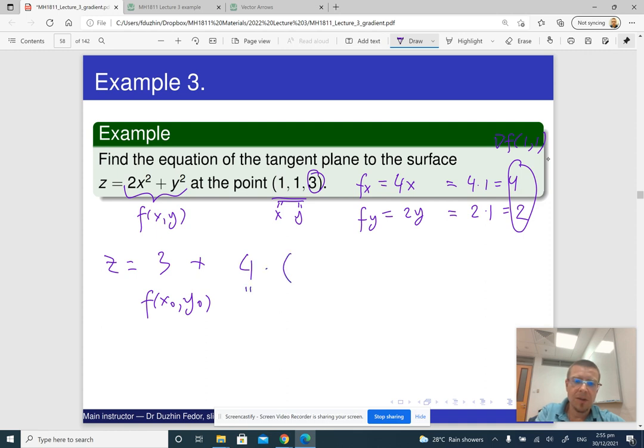Plus 4 times f_x times x minus x_0, which is 1. Plus 2, which is f_y, times y minus y_0. 1, also minus 1. This one is y_0. And that's the answer.